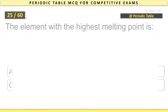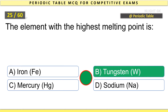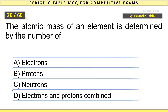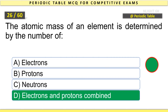The element with the highest melting point is Tungsten. The atomic mass of an element is determined by the number of electrons and protons combined.